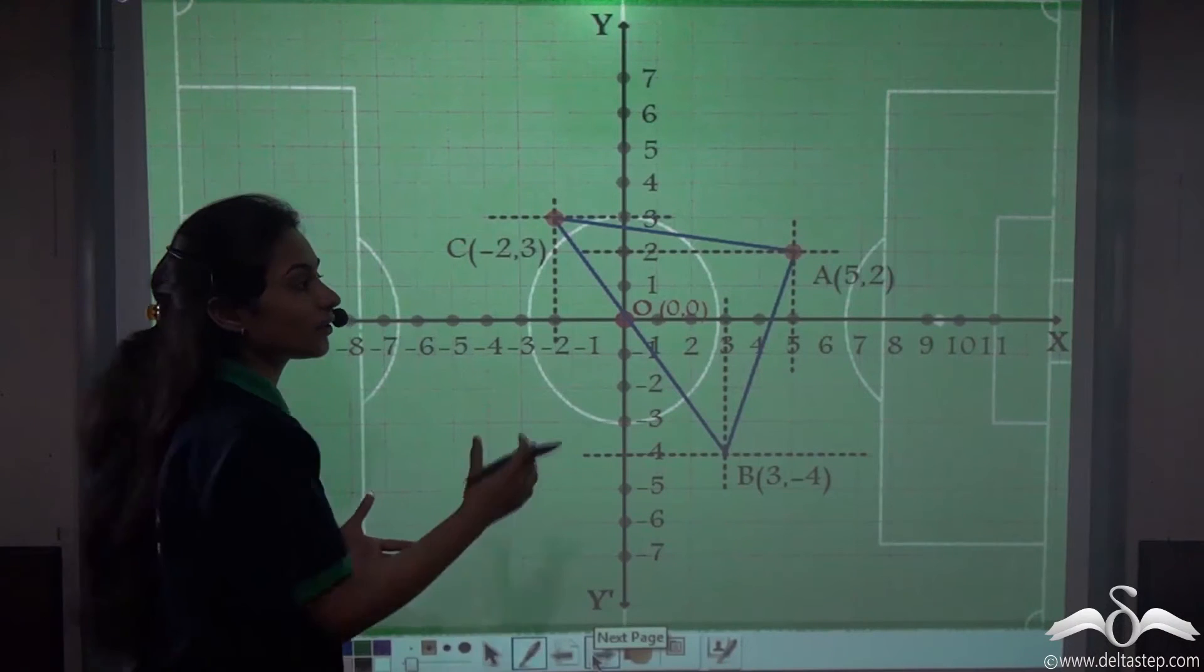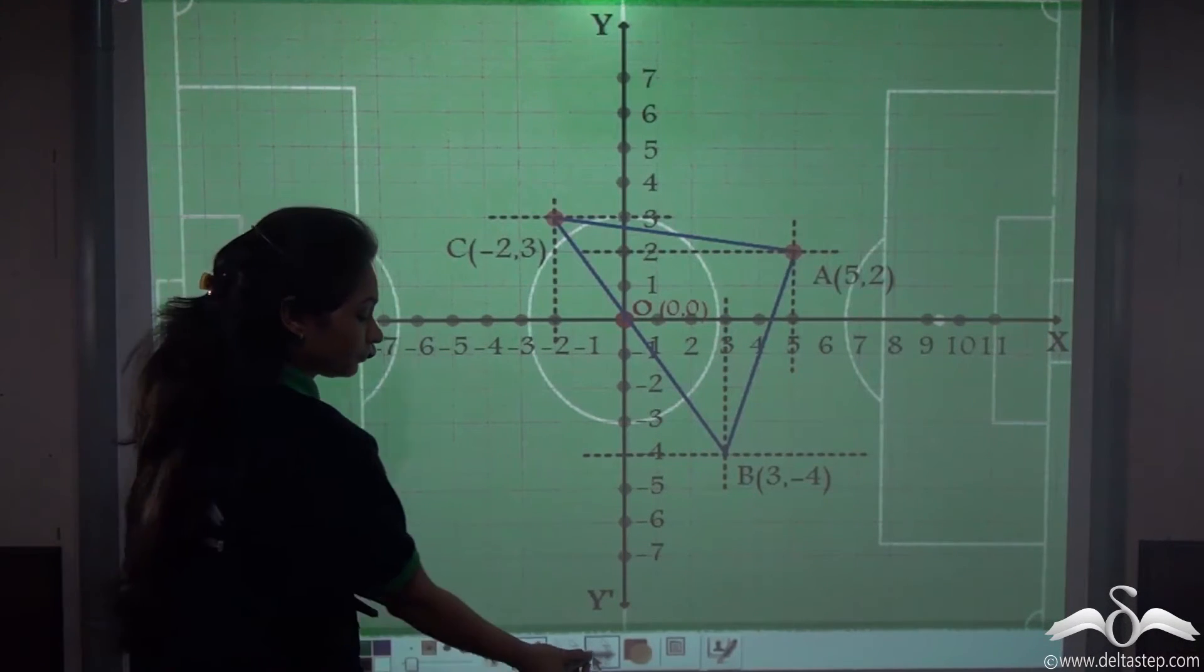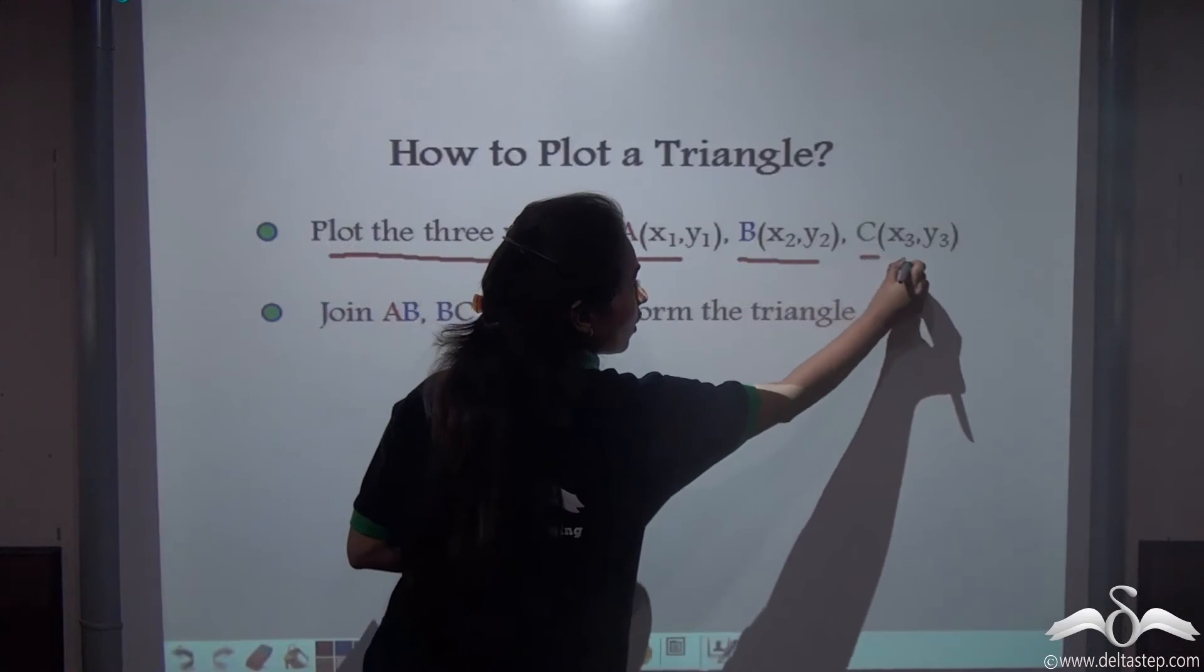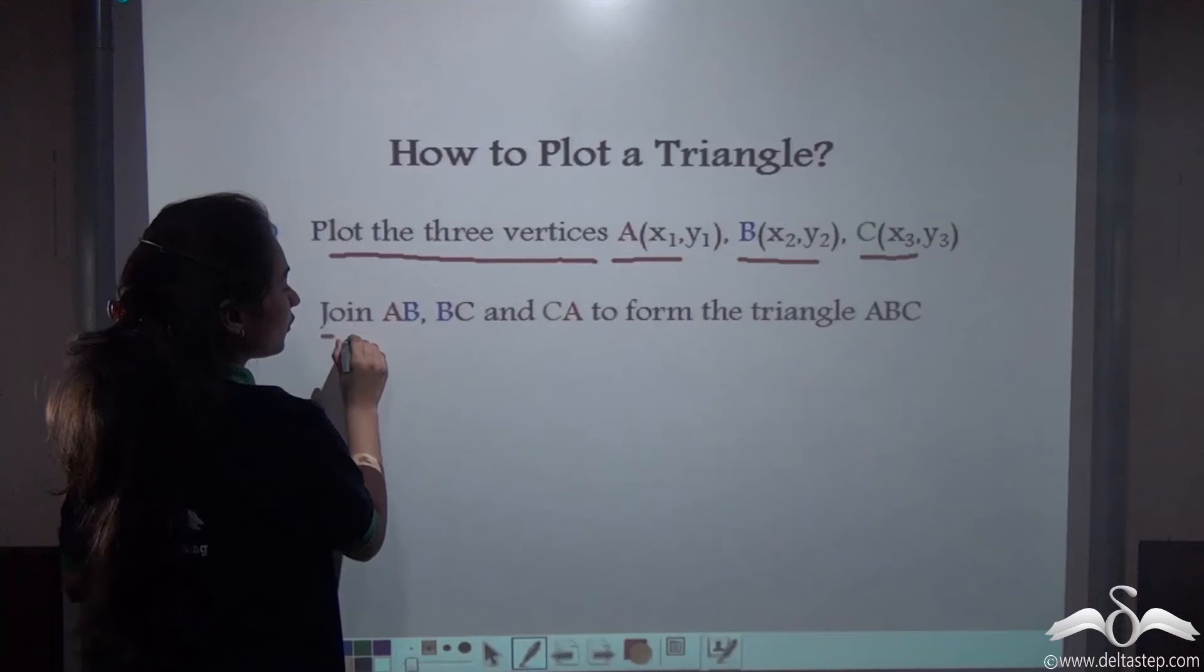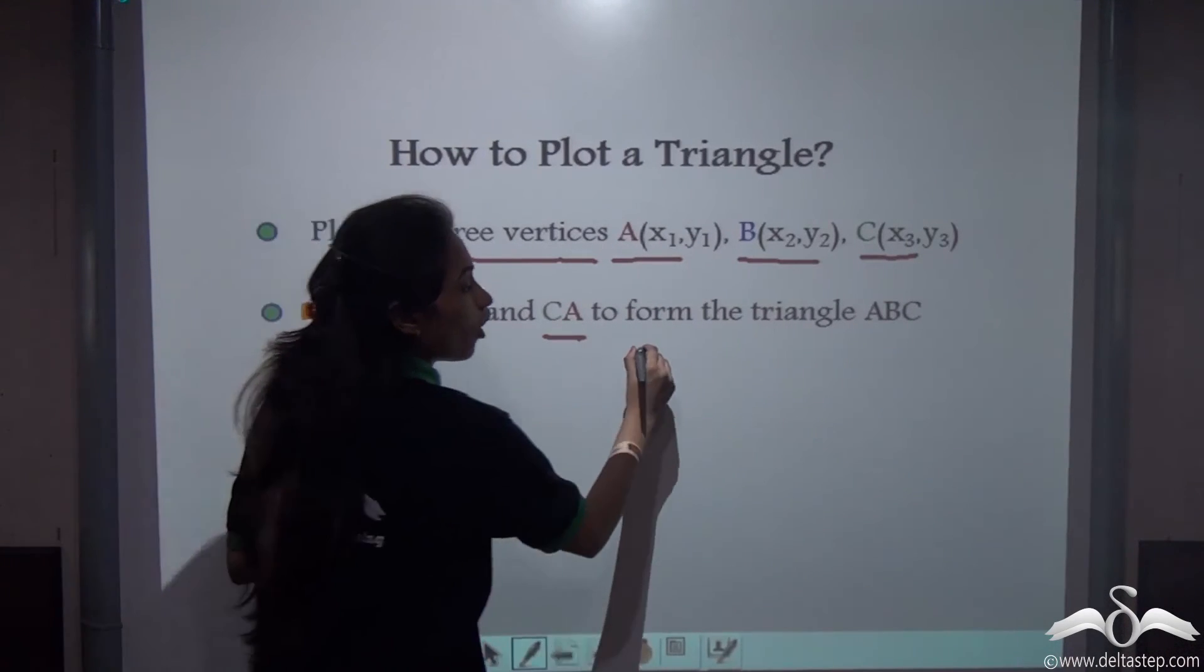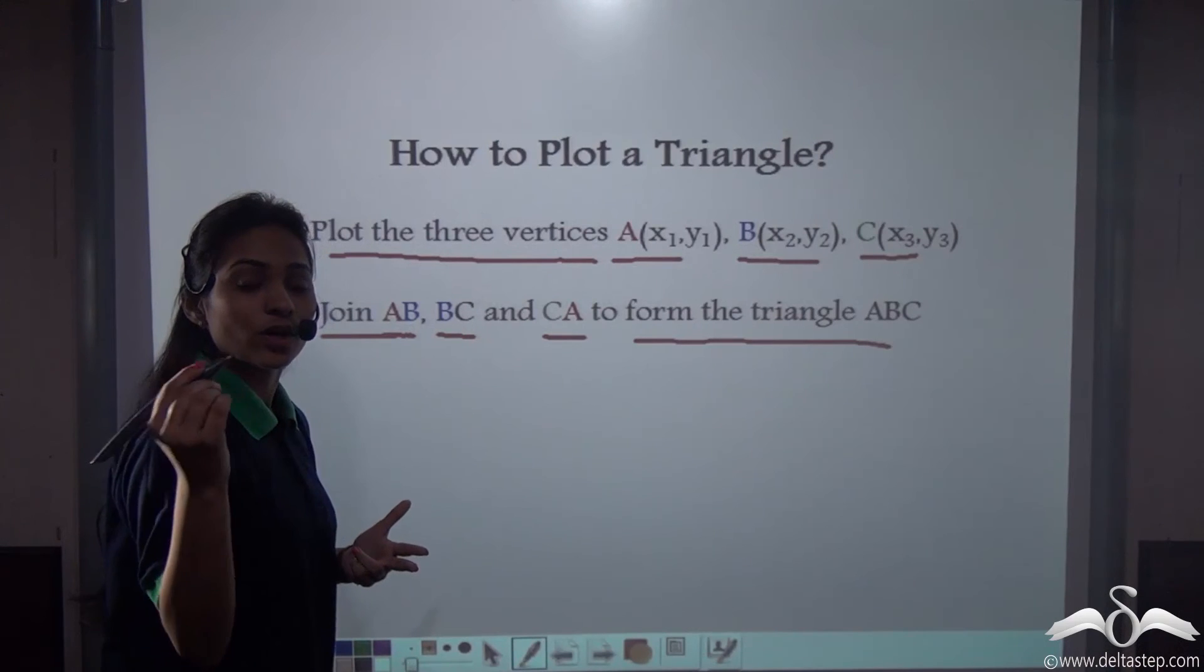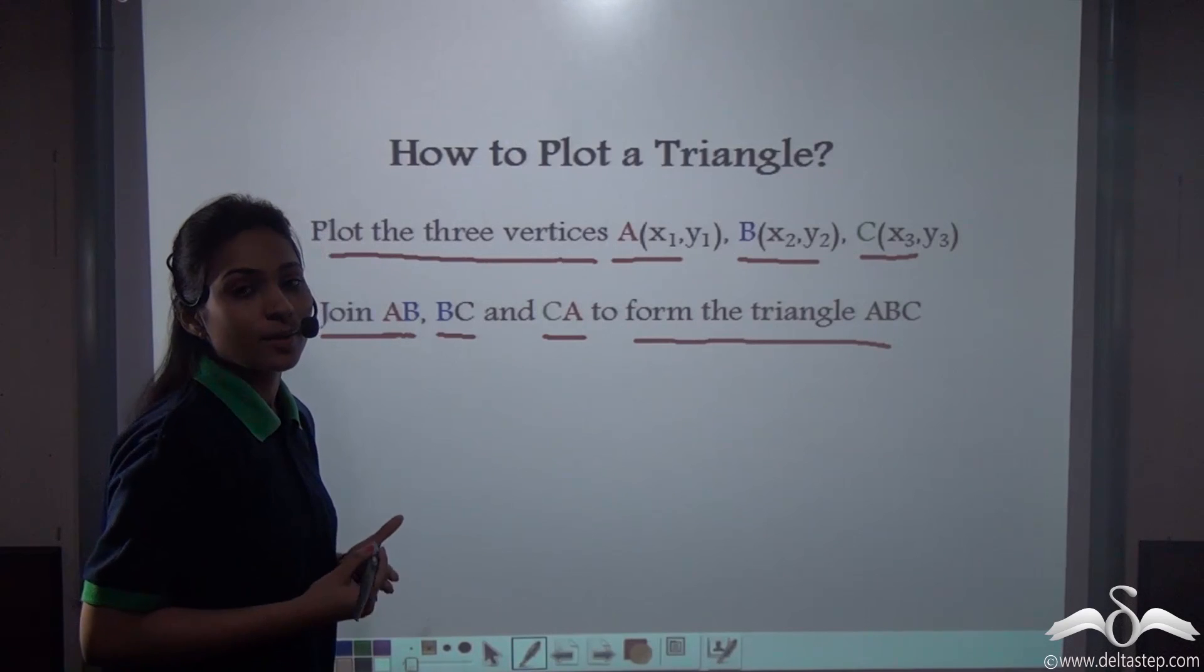This is how we construct a triangle on a graph paper. First of all we plotted three vertices, say A, B, and C, with respective x and y coordinates, and then we joined AB, BC, and CA, those line segments, to form the triangle ABC. You can take any three random points on a graph paper, join them as line segments, and create a triangle using those three points.